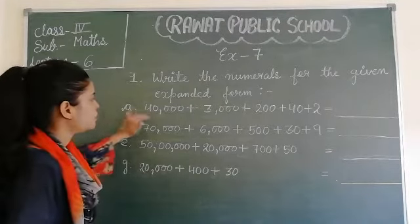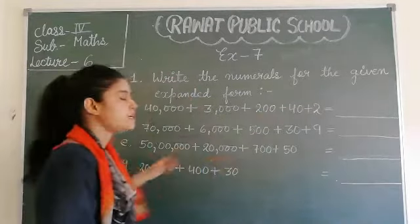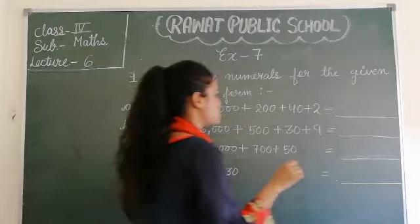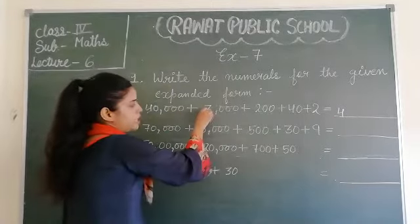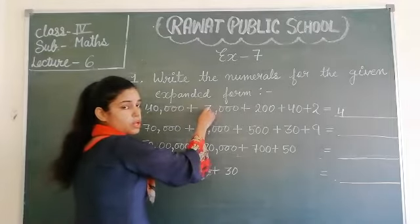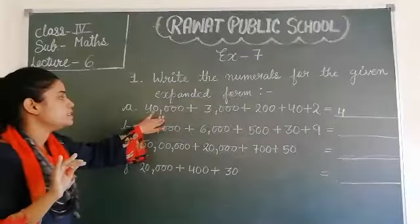Question number A. Forty thousand, three thousand, two hundred, forty and two. Isme hai kya karna hai? Har digit ka first number lena hai. Forty thousand, forty thousand ka four likha hai. Three thousand. Forty thousand se before.